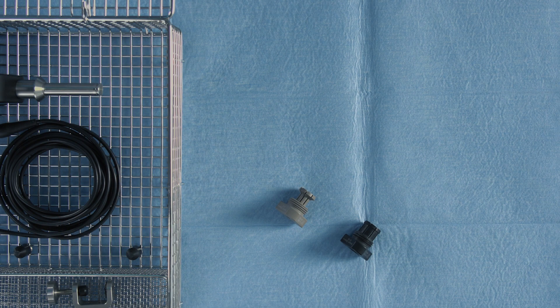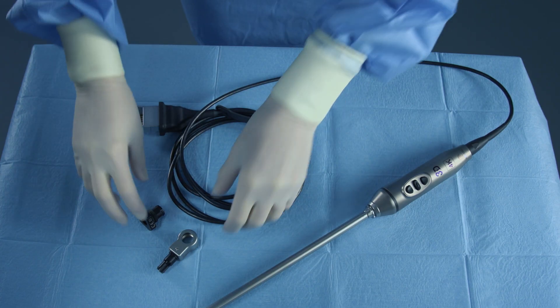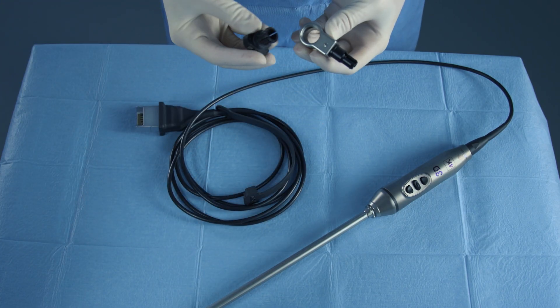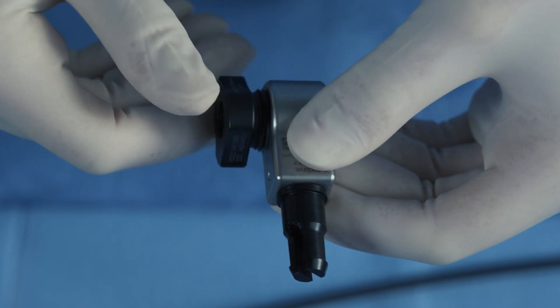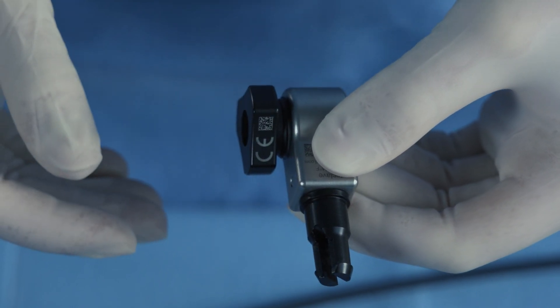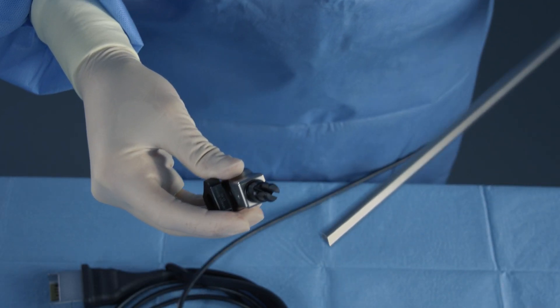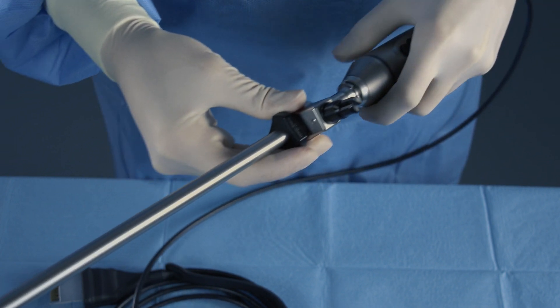Choose the tension sleeve you are going to use, 5mm or 10mm. Screw the sleeve loosely into the endoscope clamp. The tension sleeve should point toward the distal end of the scope.